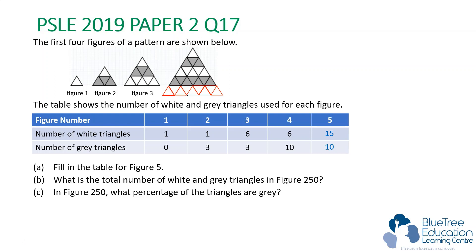For Part B, what is the total number of white and gray triangles in figure 250? We are now interested to find the total number of white and gray triangles, so we have to find a pattern for the total. We add in a total column. The total number of triangles in figure 1 is 1, figure 2 is 4, figure 3 is 9, figure 4 is 16, and figure 5 is 25. We see a very clear pattern.